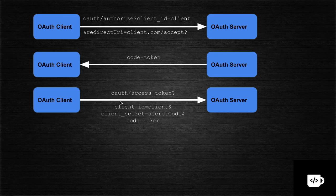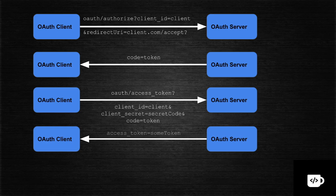Citibank now has to authenticate itself. It sends its client ID and client secret — these are registered credentials of Citibank with Facebook, already generated by Facebook. This is important because what if some other server is faking as a Citibank server? So Citibank sends its client ID, client secret, plus the authorization code from the previous step. Facebook then responds with an access token, which is valid for a particular user only for a particular period of time.